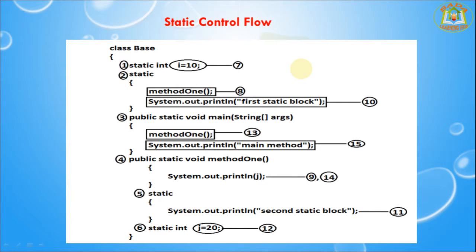Next I'm going to discuss about Read Indirectly Write Only state — that means RAWO. If a variable is in Read Indirectly Write Only state, then we can't perform a read operation directly; otherwise we will get a compile time error saying illegal forward reference.